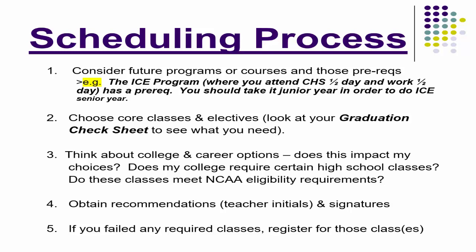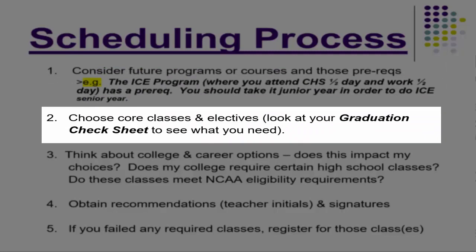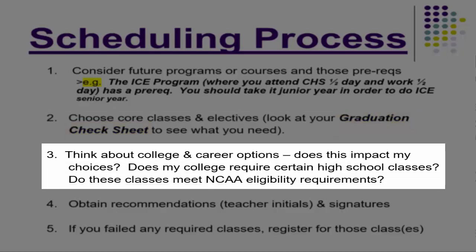As far as the scheduling presentation, there are a few things you want to consider. Number one, consider future programs or courses and their prerequisites. For example, the ICE program, where you attend Carroll High School for half a day and then work for the other half. This has a prerequisite you must take your junior year in order to do ICE your senior year. Number two, choose core classes and electives — look at your graduation check sheet. Number three, think about college and career options. Does your college require certain high school classes? Do these classes meet NCAA eligibility requirements? Make sure you're looking into these things.